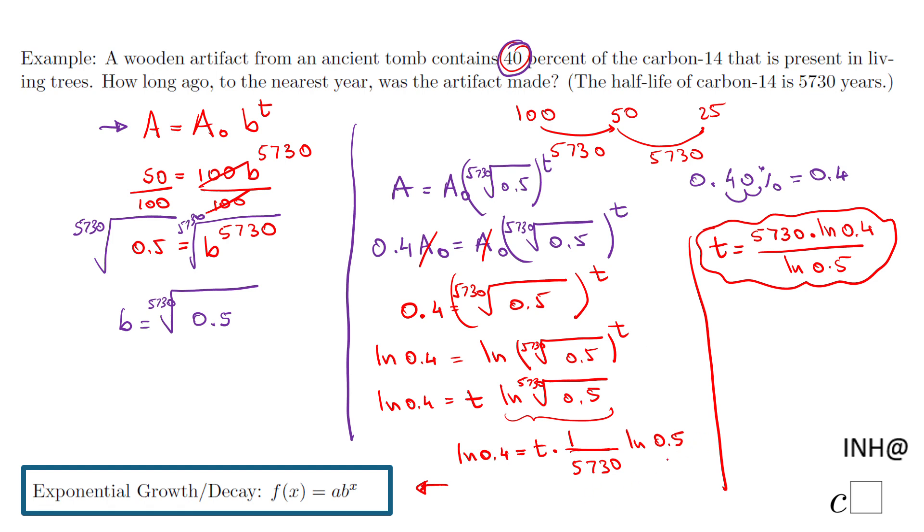Now we're going to take a calculator to evaluate this. I multiply both sides by 5730, divide both sides by ln(0.5), and I end up with t. Let me grab a calculator now and do this math.